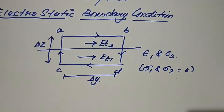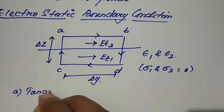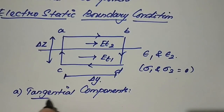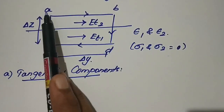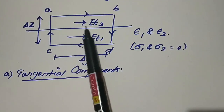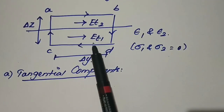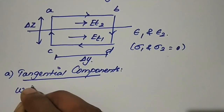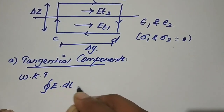We'll first look at the tangential component for these electrostatic boundaries. Let us consider a rectangular path a-b-c-d-a of length delta y and height delta z, placed half above and half below each medium. Let their tangential components be E_t1 and E_t2 respectively. We know that according to the work-energy theorem, the closed integral of E dot dl is equal to 0.